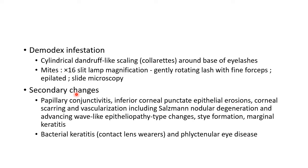Secondary changes of chronic blepharitis include papillary conjunctivitis, inferior corneal punctate epithelial erosions, corneal scarring and vascularization including Salzmann nodular degeneration and advancing wave-like epitheliopathy-type changes. There can also be associated stye formation and marginal keratitis. Rarely, chronic blepharitis can lead to bacterial keratitis, especially in contact lens wearers and in phlyctenular eye disease.